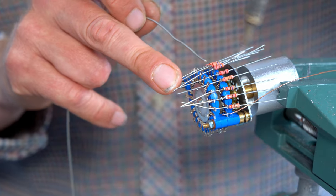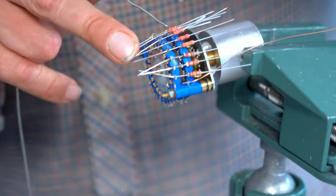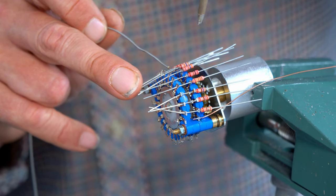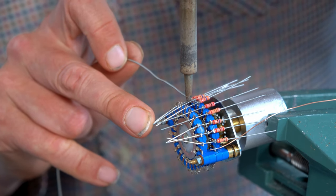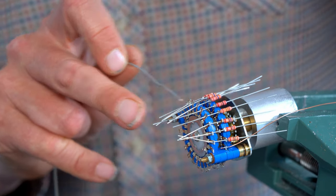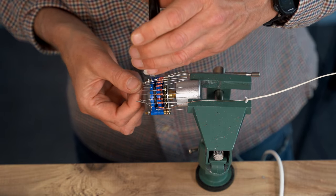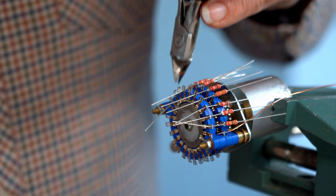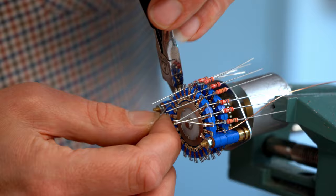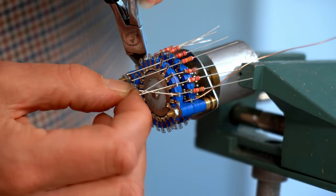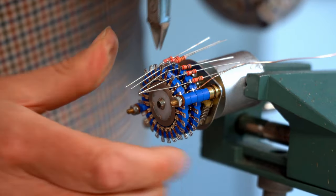Soldering is so important. You can see all my joints are pretty wet, which is what you want. It just shows that you've got the right temperature iron and it won't give you a dry joint two years down the line.